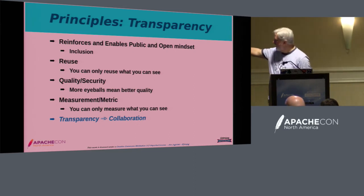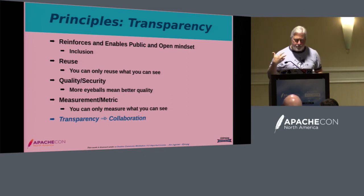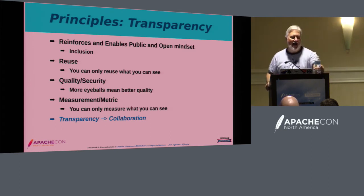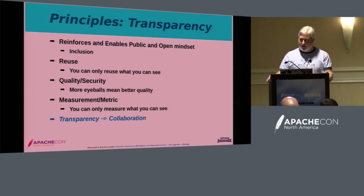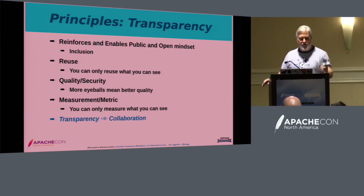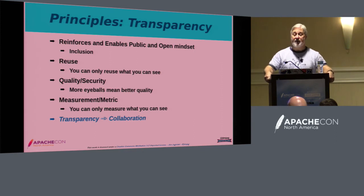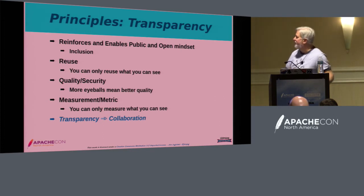By having things incredibly transparent, you get the 'multiple eye syndrome' — more people are able to look at the software project and the code. You're going to get better security, better constructed software. Another very important thing is that you really can't measure what you can't see. Lack of transparency can hide a lot of nastiness, a lot of inefficiencies going on inside your development. It can also expose really fantastic successes. When you first get into InnerSource, one of the biggest concerns is: how do I know if I'm being successful? If you don't have an environment set up for transparency, you're not going to be able to measure that.